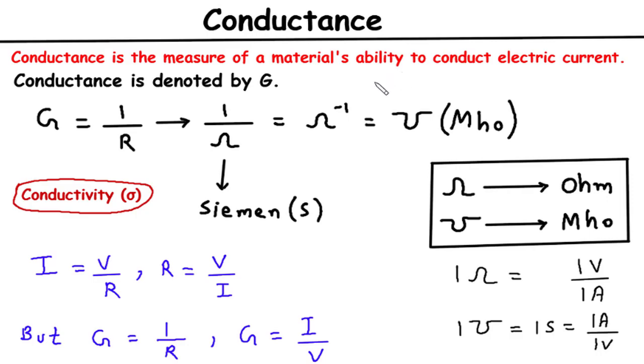Conductance is the reciprocal of resistance and is represented by the symbol G. The unit of conductance is the Siemens, S. Conductance is a fundamental property of materials and plays a vital role in the behavior of electrical circuits.